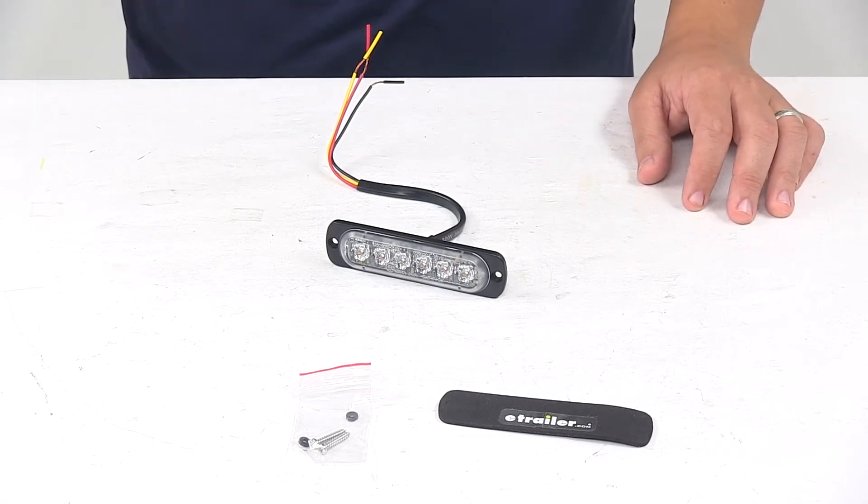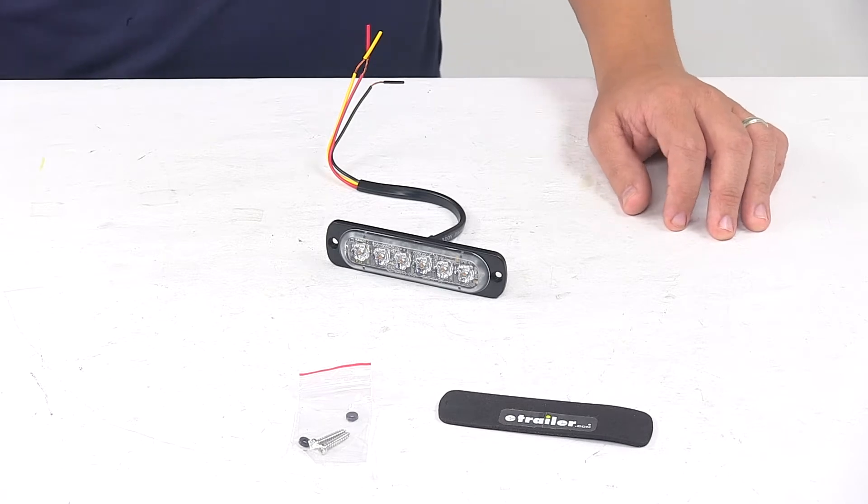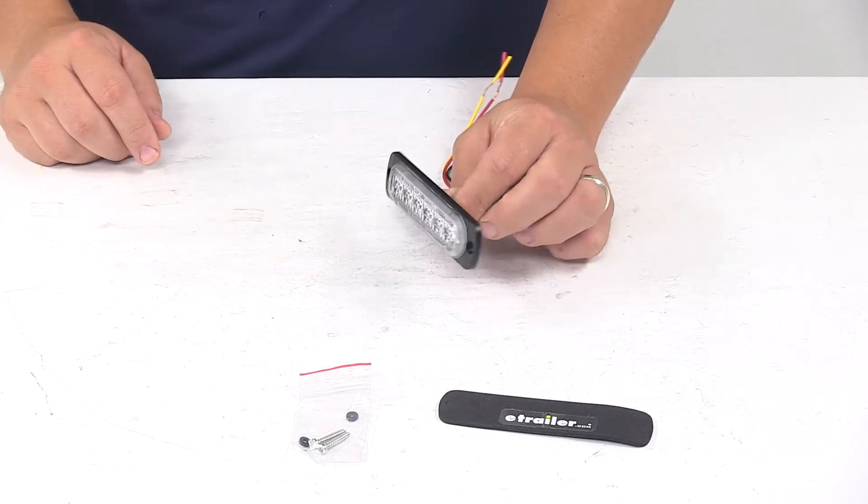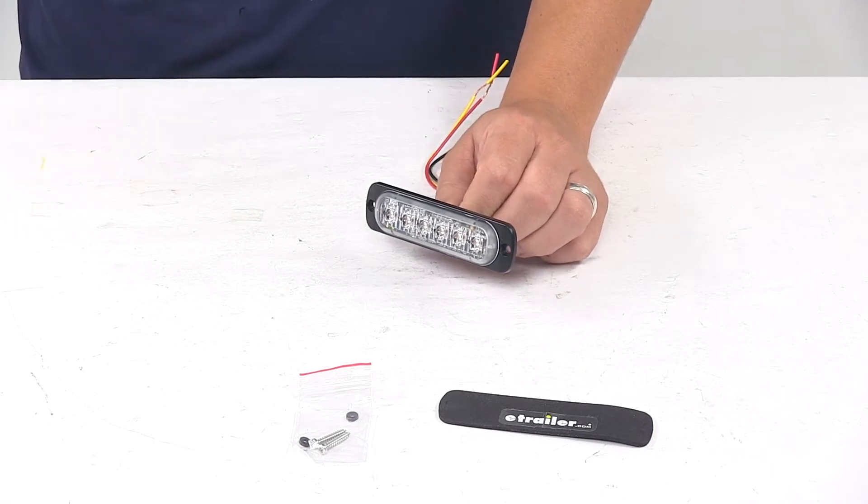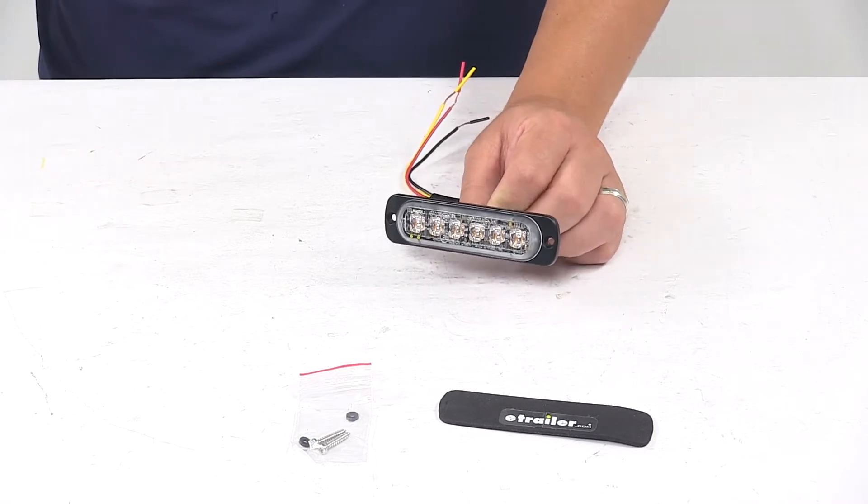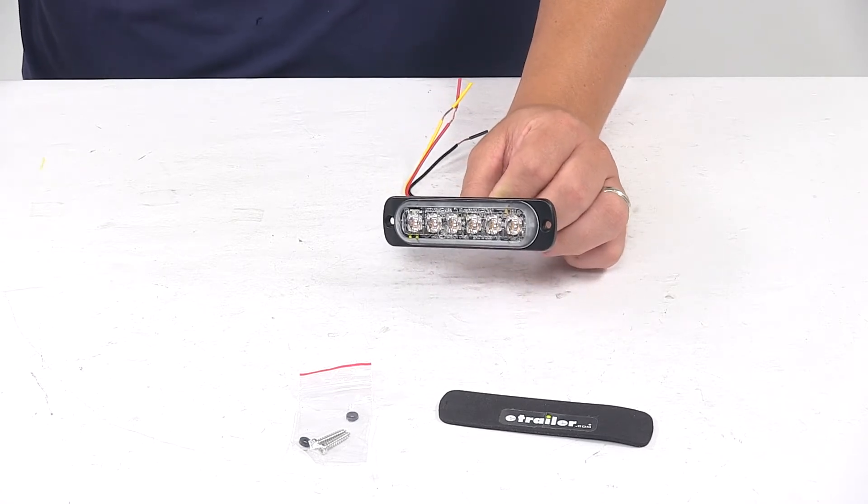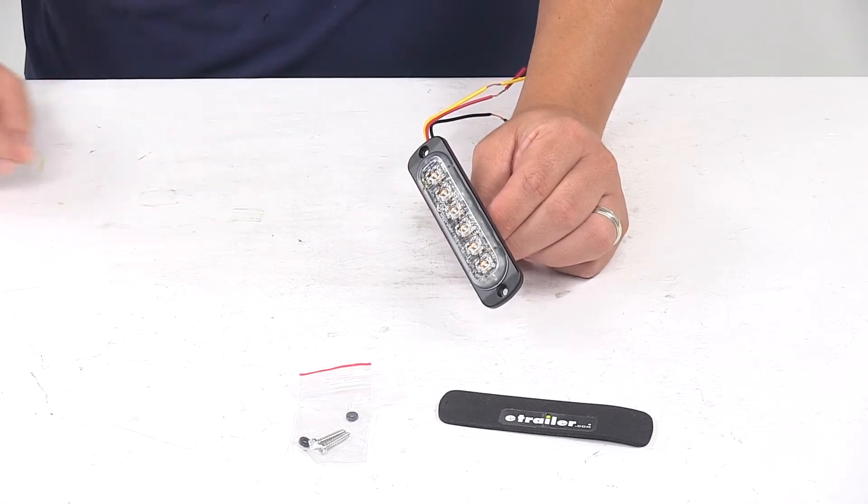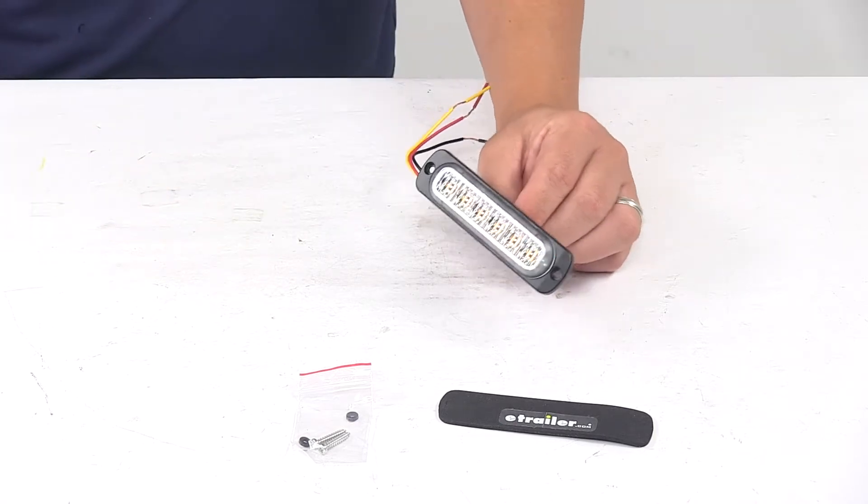Today we're taking a look at a six LED thin strobe light. This clear LED strobe light is designed with a three-eighth inch profile to fit tight areas. The 12 to 24 volt strobe light has six LEDs and features 19 flash patterns with alternating and synchronized features. The light is rated IP67 for water and dust resistance and has a SAE J595 class one rating.